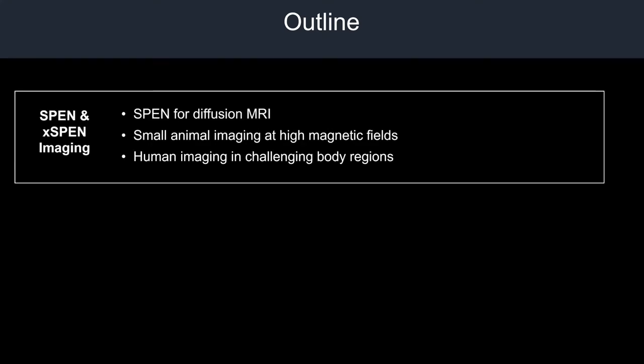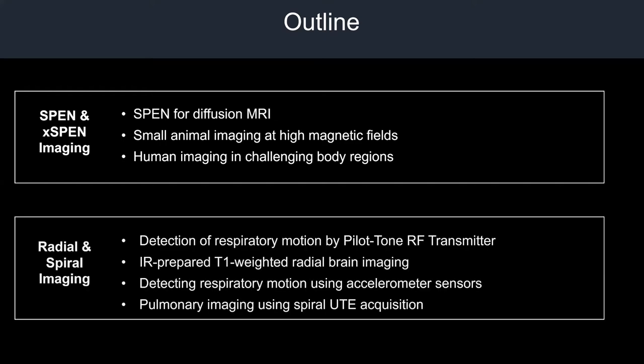I also cover work done during my time at NYU, which was more towards developing motion-robust solutions for non-Cartesian acquisitions. The outline: I will give a brief overview of SPEN in the context of diffusion MRI, work done in small animal imaging at high magnetic field, and human imaging in challenging body regions. In the second half I will cover radial and spiral imaging, a new method for motion detection and correction called the Pilotone, IR-prepared T1-weighted radial brain imaging, and accelerometer sensors for respiratory motion detection.